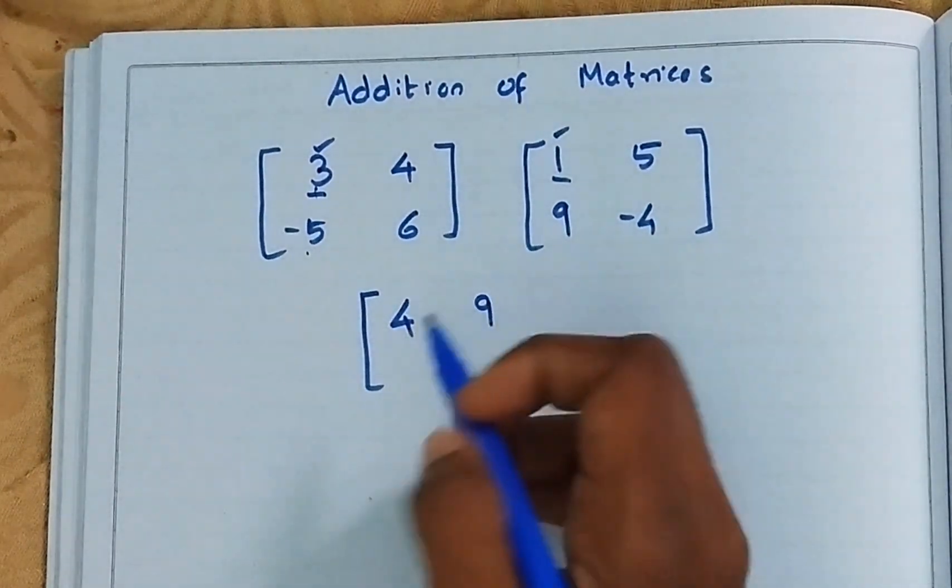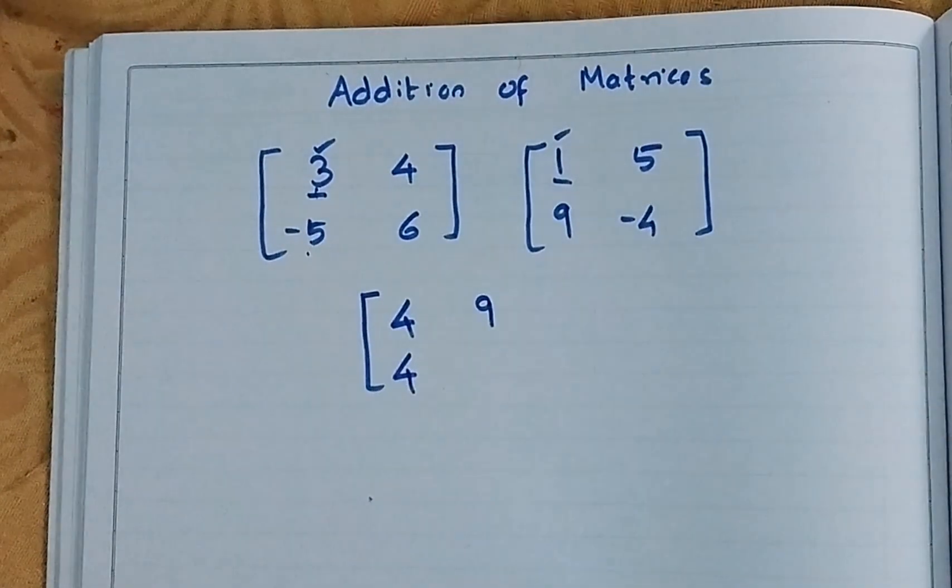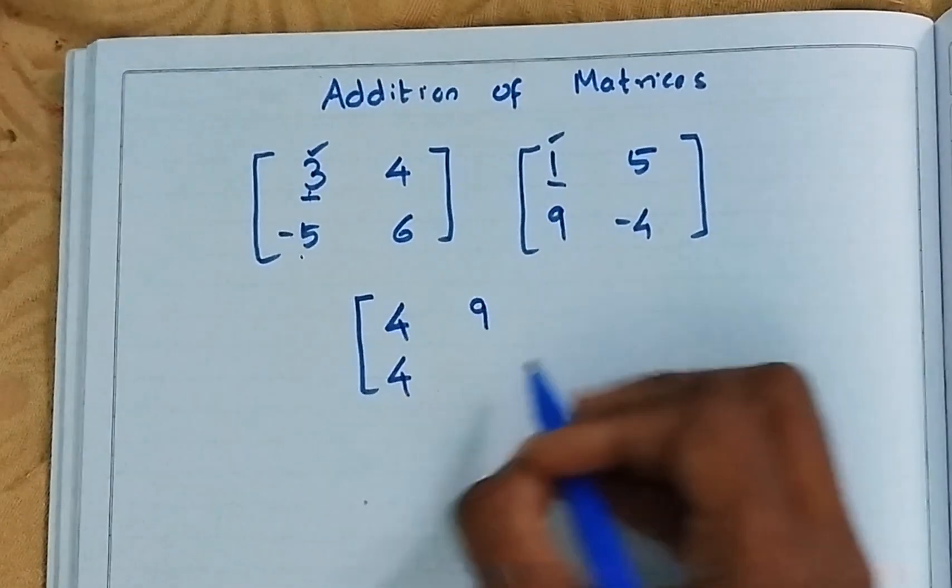Next this and this. Minus 5 plus 9, plus 4. 6 minus 4, 2.